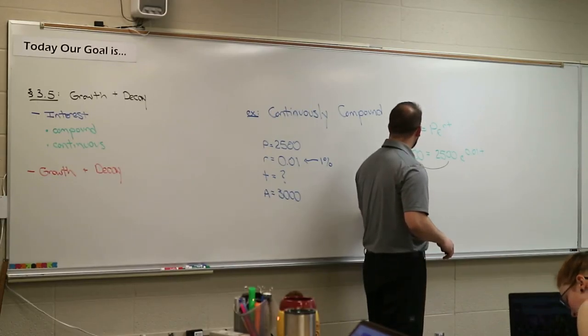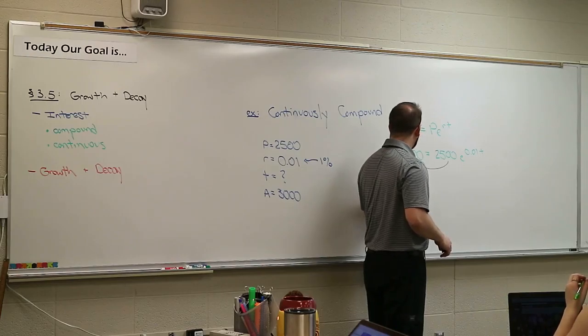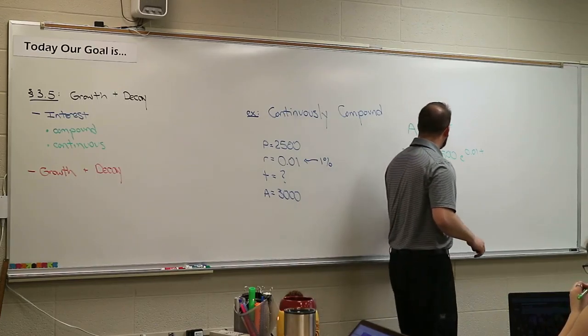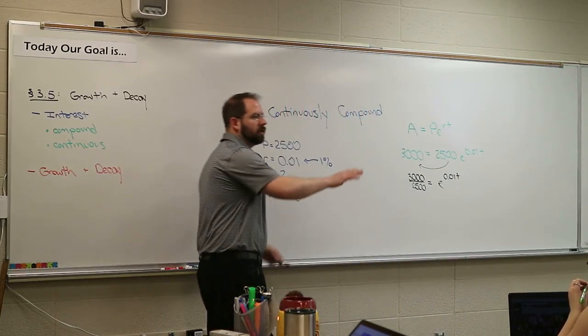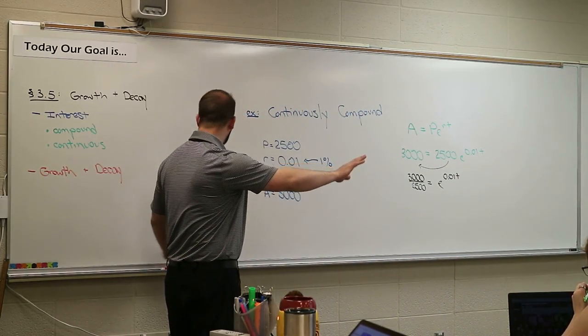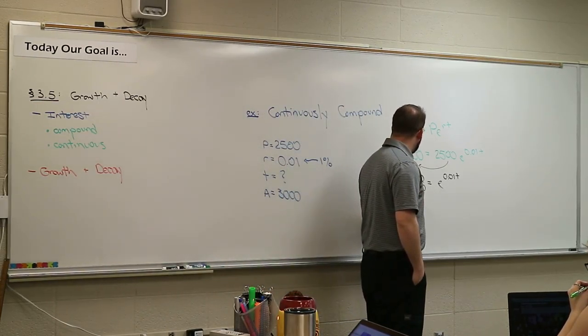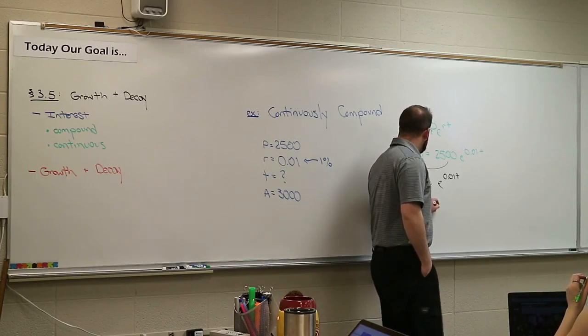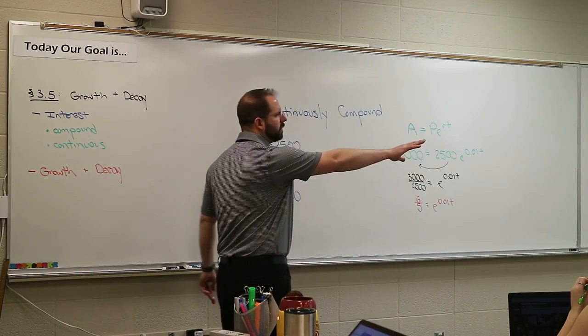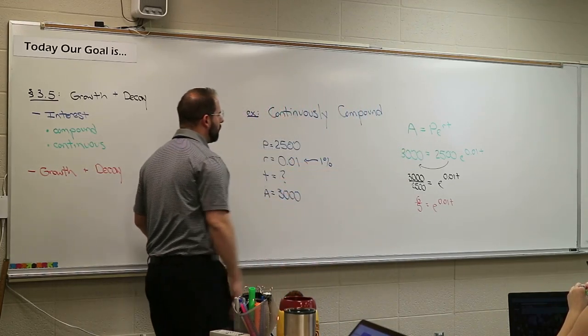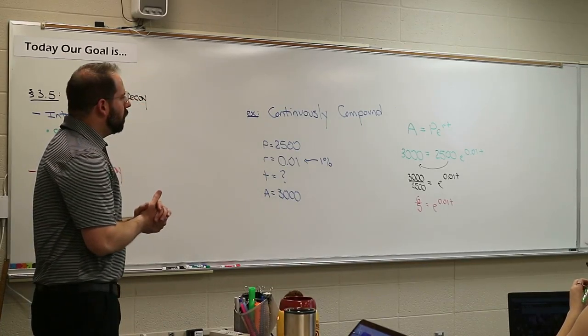This is the problem that we're looking at. That's the formula for a continuously growth problem. The $3,000 is the amount I want the account to grow to. The principal is the amount that I'm throwing in that account originally. And the rate, we're going to go 1% interest rate per time. Actually doing the math here, we divide the 2,500 across. When you divide that over, you're going to get 3,000 over 2,500 equals e to the 0.01t.